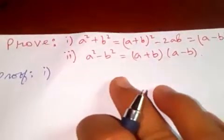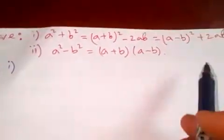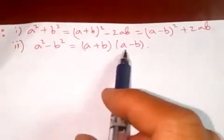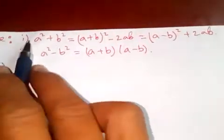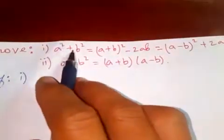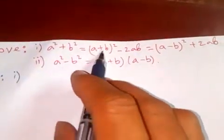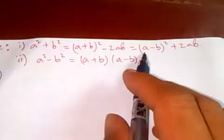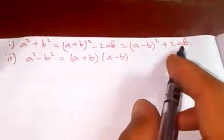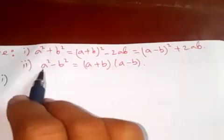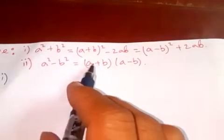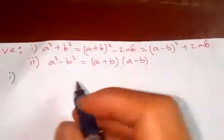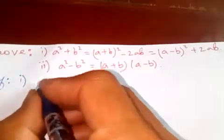Hi friends, today I'm going to prove this identity which is often used in mathematics and in science. Formula number one: a² + b² = (a+b)² - 2ab, and again which is also equal to (a-b)² + 2ab. Formula number two is a² - b² = (a+b)(a-b). So let's proof formula number one.